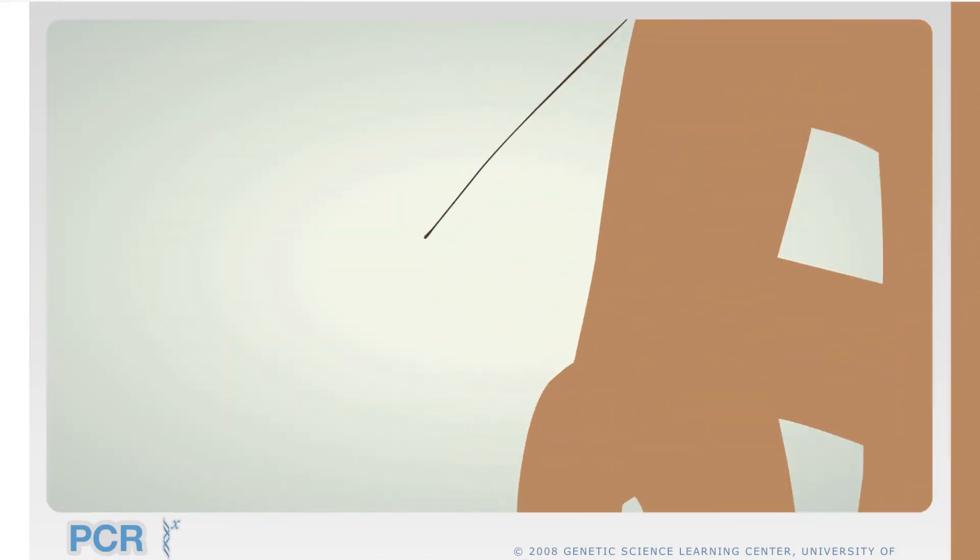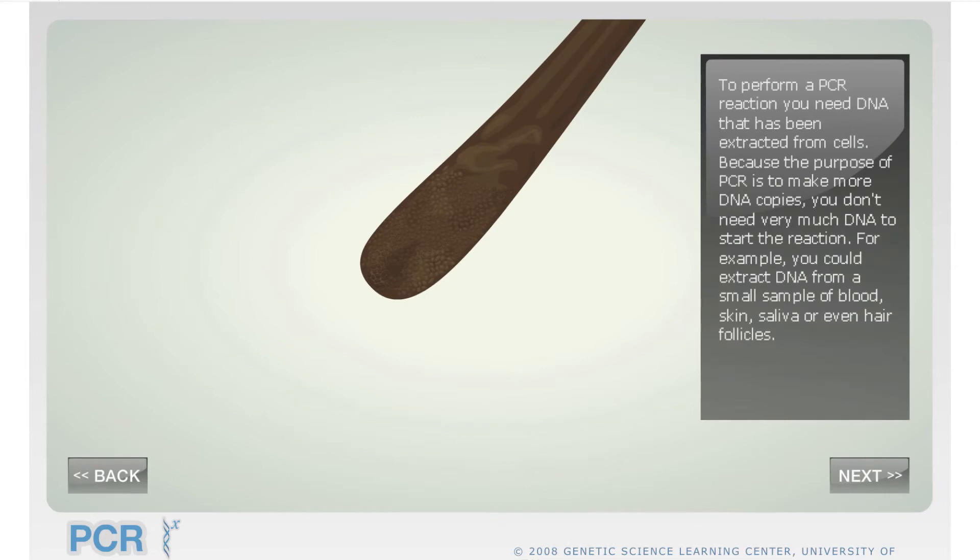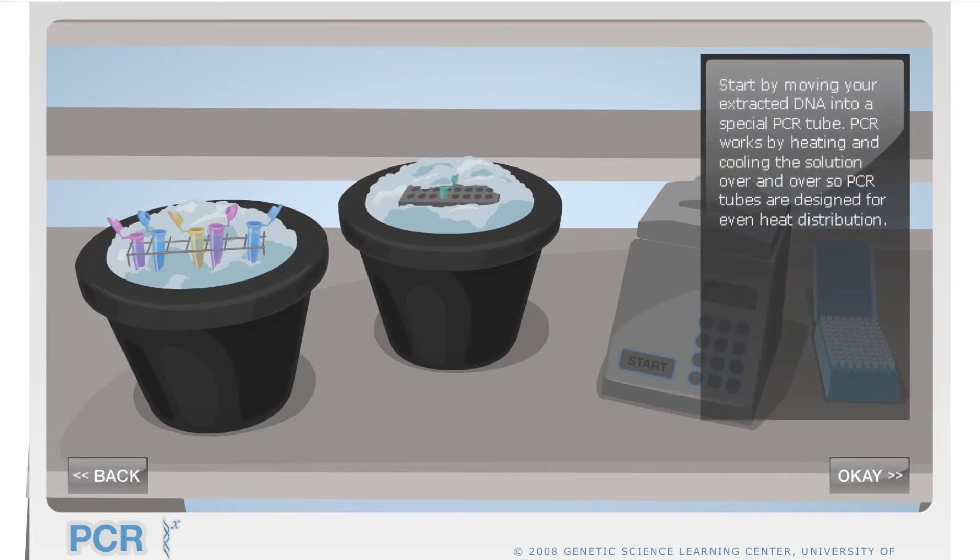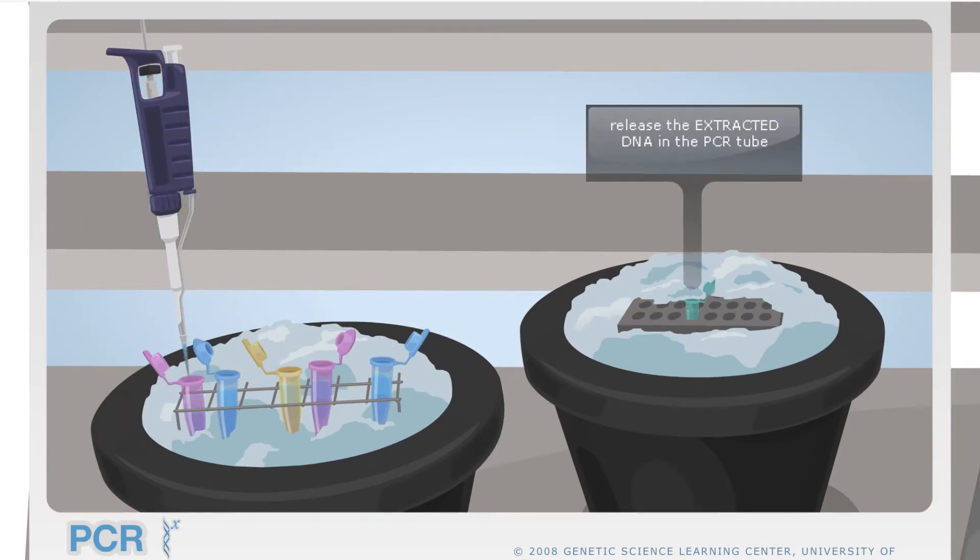So to perform PCR, you need a DNA sample. That means you need to perform DNA extraction first on your cellular samples. We will place our DNA sample in a PCR tube designed for even heat distribution because we will be heating and cooling these tubes to perform every cycle of the PCR.